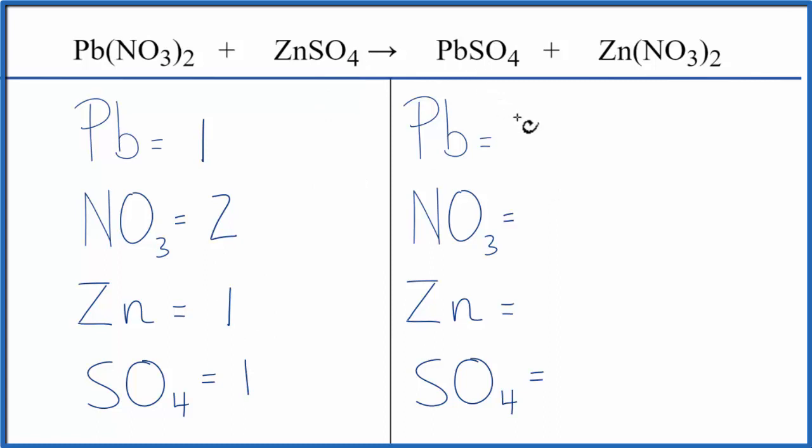On the product side, I have one Pb, two times the one nitrate. That gives me two of those. One zinc, and then one sulfate.